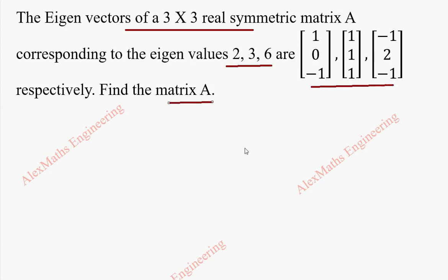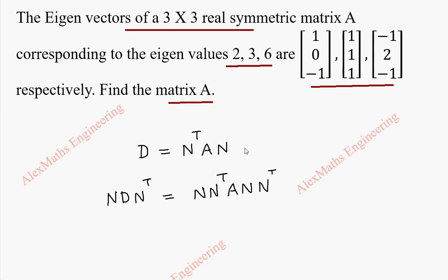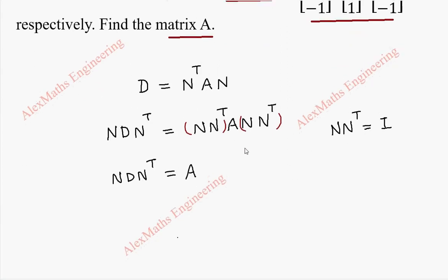Using this, we have to find the matrix A. By orthogonal transformation, we already know the formula for the diagonalization of the matrix, which is D equal to N transpose A N. Now, I am going to pre-multiply this entire expression by N. So, this will become N D equal to N N transpose A N. Then, again, I am going to post-multiply with N transpose on both the sides. Since it is an orthogonal matrix, N into N transpose or N transpose into N is identity matrix. So, N D N transpose will become, this is I, this is I. And finally, we are left with only A. So, this is our formula for finding the matrix A: A is N D N transpose.